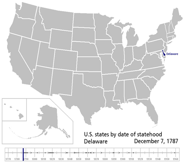The Constitution went into effect on June 21, 1788, after ratification by nine of the thirteen states, and the federal government began operations under it on March 4, 1789. Since then, thirty-seven additional states have been admitted into the Union.